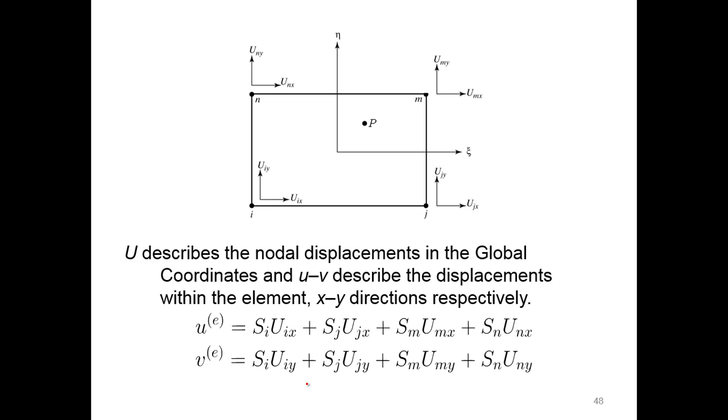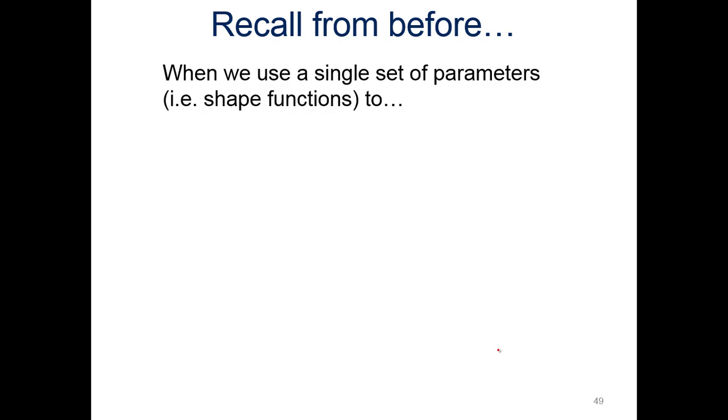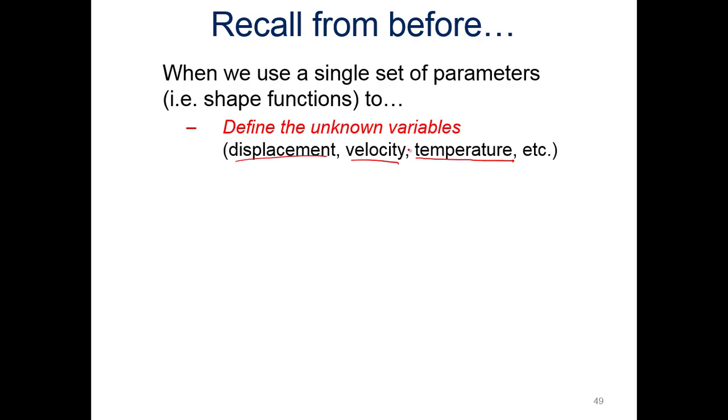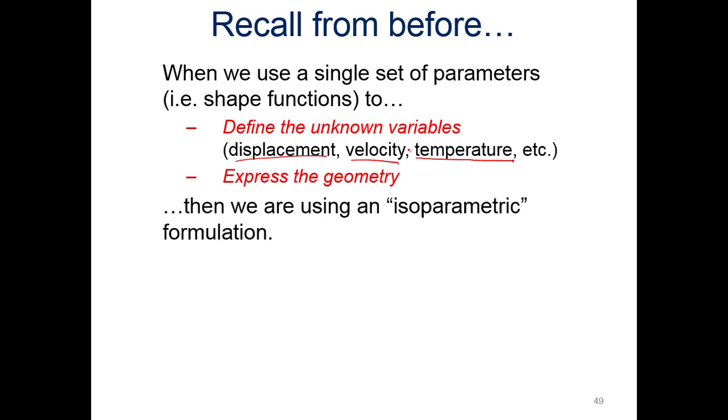Isoparametric elements - not a whole lot to say here besides stuff we've already covered. We have capital U which describes the known displacements in the global coordinates. And our lowercase U and V describe displacements within the element, so local coordinates, in the X and Y directions respectively. If we look at the local displacement within the element, we can use that based on the shape functions and our global locations at each element. When we use a single set of parameters or shape functions to define unknown variables - we define temperature in this example because we're looking at a fin, but we can also do displacement as well as velocity for our psi.